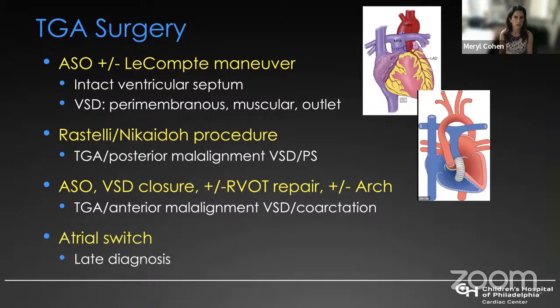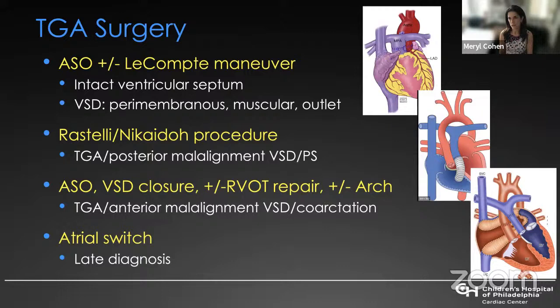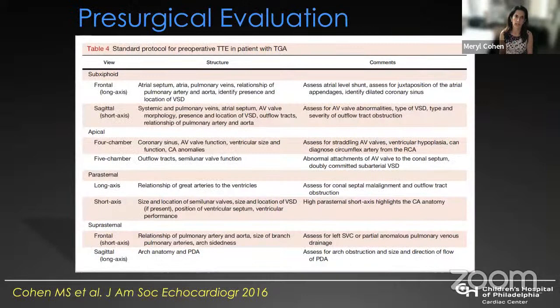In patients with anterior malalignment VSD with or without coarctation, they can usually undergo an arterial switch operation, but it is much more complicated — with VSD closure, potentially opening up the right ventricular outflow tract similar to Tetralogy of Fallot. Many will have arch obstruction or arch hypoplasia that also needs to be addressed. The atrial switch operation, which was standard of care from the 1960s through the 1980s, is now used only in patients with late diagnosis where the left ventricle cannot perform as the systemic pump.